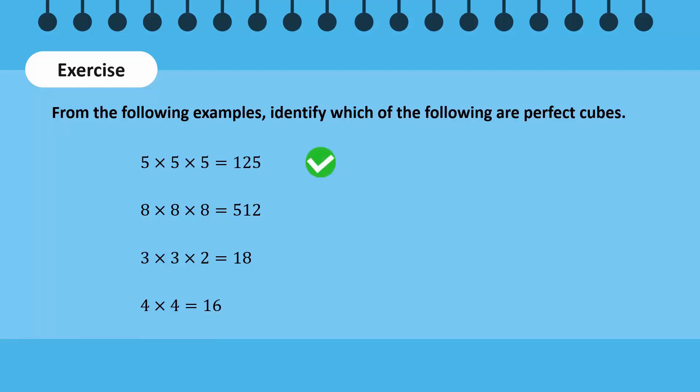125 is a perfect cube as it is equal to 5 multiplied to itself twice or 5 cubed. 512 is also a perfect cube as it is equal to 8 multiplied by itself twice or 8 cubed.